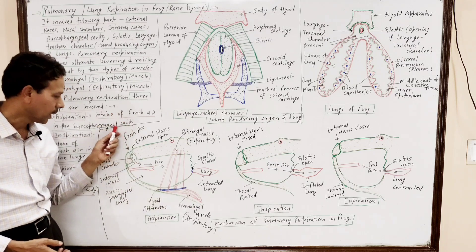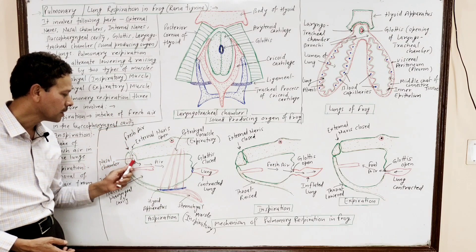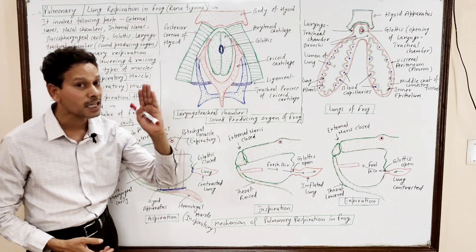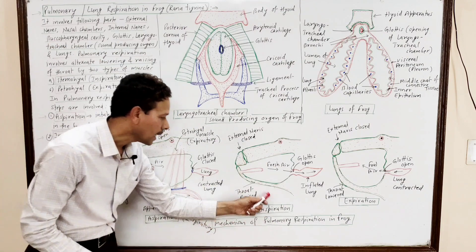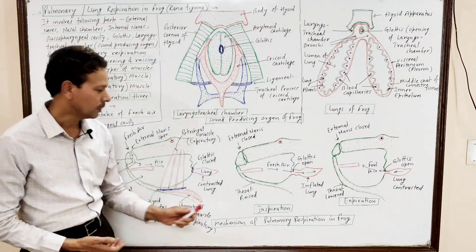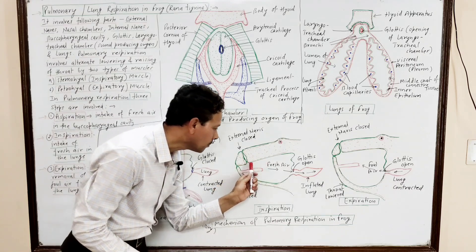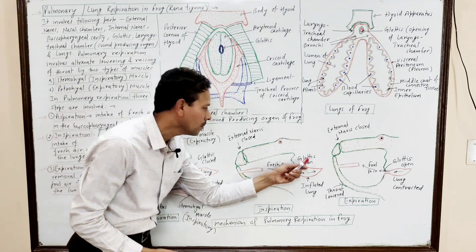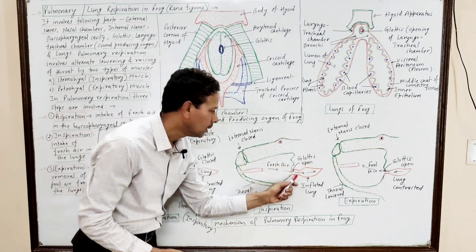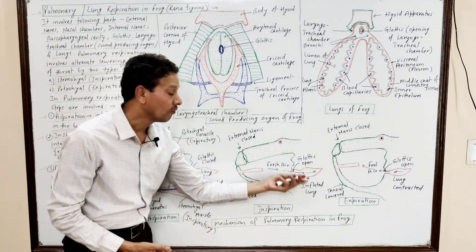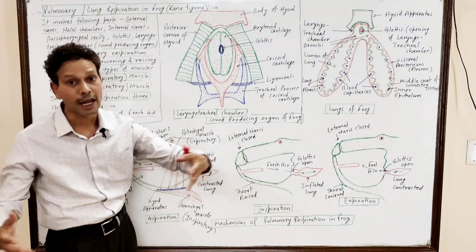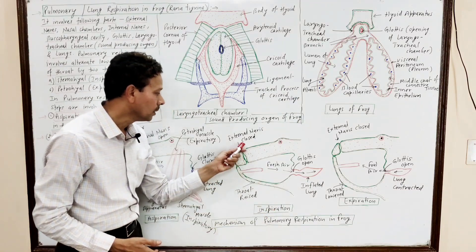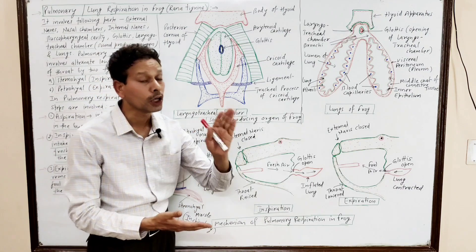To recap: first step — aspiration — air from outside through external nares, nasal chambers, and internal nares enters the buccal-pharyngeal cavity. Second step — inspiration — air from the buccal-pharyngeal cavity enters into the lungs. The glottis opens and the lungs become inflated. During inspiration, the external nares remain closed.